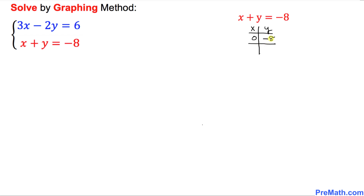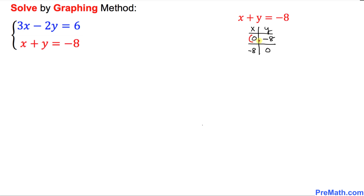In the next step, we plug in y equal to 0 and find the x value. With y equal to 0, we get x plus 0 equals negative 8, so x equals negative 8. Our two points are therefore (0, -8) and (-8, 0).